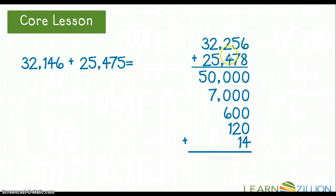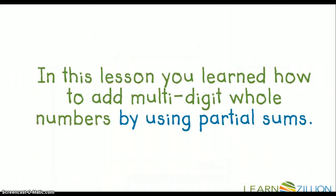So if I add these numbers together, I'm going to start over here on the right. 4 plus nothing is 4. 2 plus 1 is 3, giving me 30. 6 plus 1 is 7, giving me 700. 0 plus 7 is 7 in the thousands. And then 5 plus nothing else is 5, so I have 57,734. In this lesson, you learned how to add multi-digit whole numbers by using partial sums.